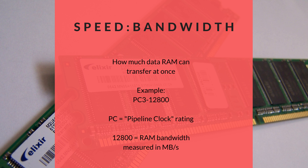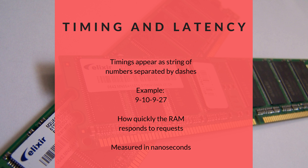Another set of numbers you'll sometimes see on RAM modules are the RAM's timings, which appear as a string of numbers separated by dashes — for example, 9-10-9-27. A RAM timing is a measurement of how quickly the RAM responds to requests, measured in nanoseconds. The lower the number, the quicker the RAM reacts to requests.